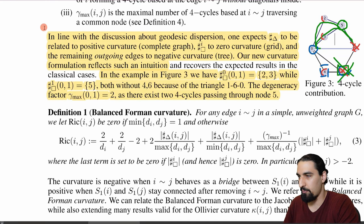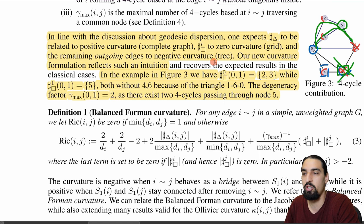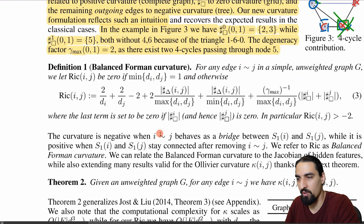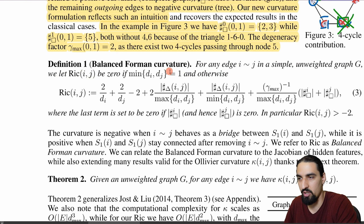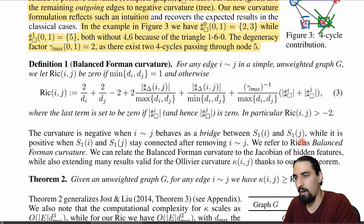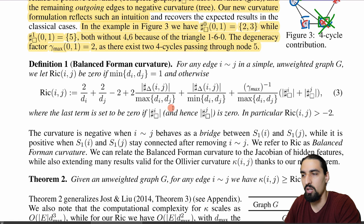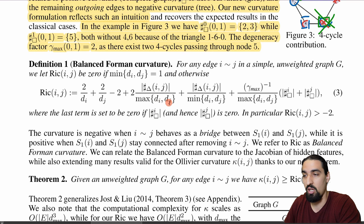In line with geodesic dispersion intuition: triangles relate to positive curvature (complete graph), four-cycles to zero curvature (grid), and remaining outgoing edges to negative curvature. The balanced Forman curvature formula sums the triangle contributions normalized by the degrees of nodes I and J, and includes the four-cycle and degree terms. A fun property: because of the minus-two term, the curvature is always greater than minus two.